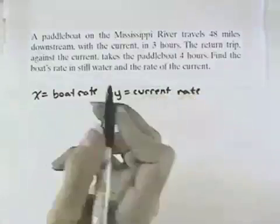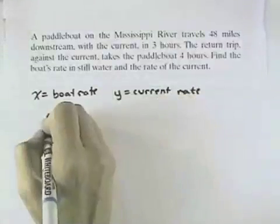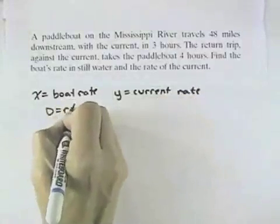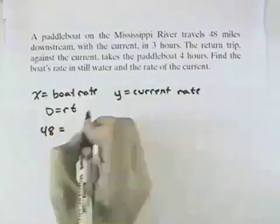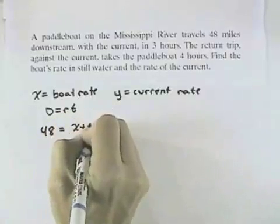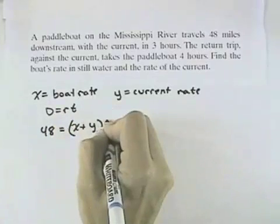So our second step is to get equations. We know that distance equals rate times time. So we had 48 miles covered at a rate with the current, which would be x plus y, times the time was 3 hours.